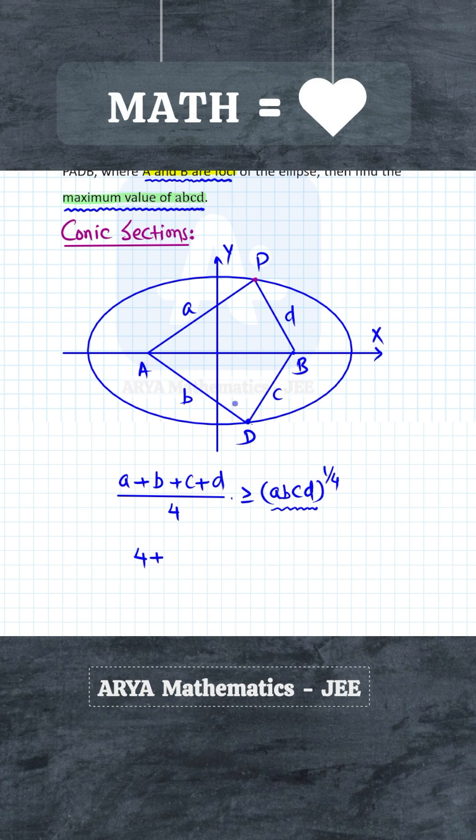Similarly, point D is on the ellipse, so the distance of point D from the two foci—that is A and B—this will again be the length of the major axis. So b + c will be again 4 units.